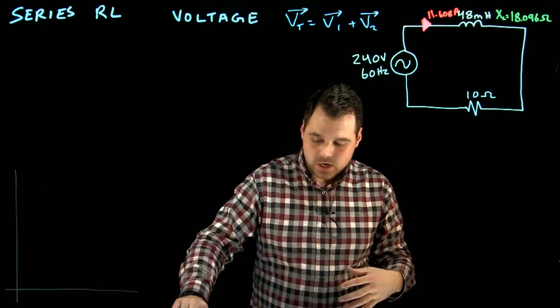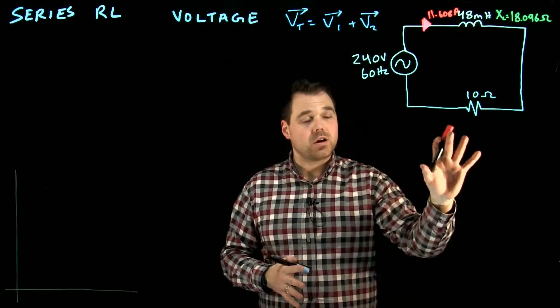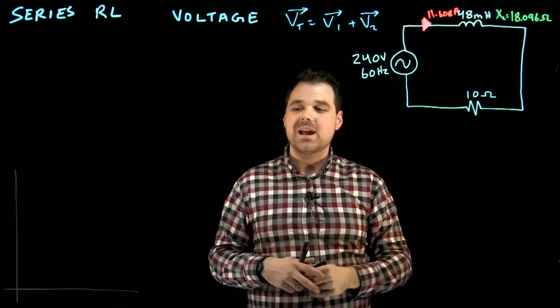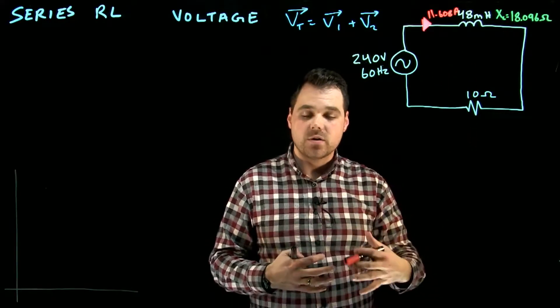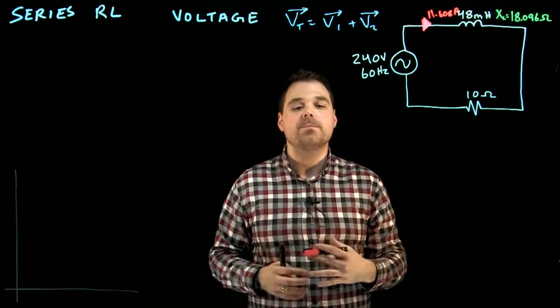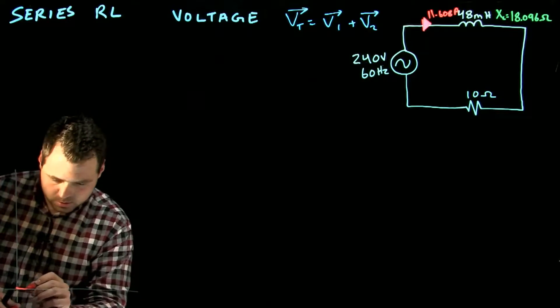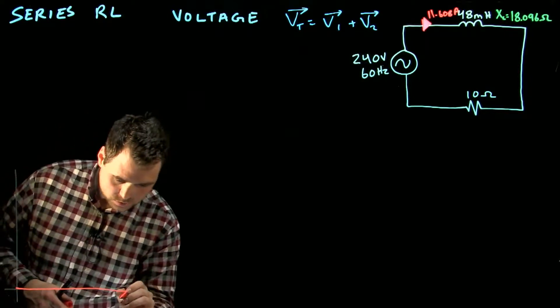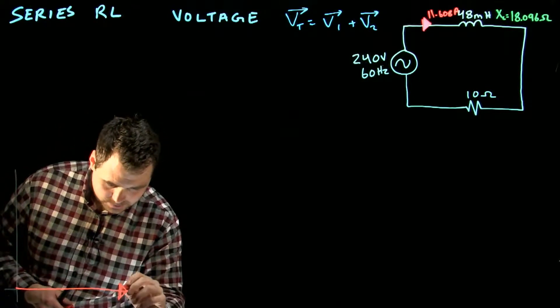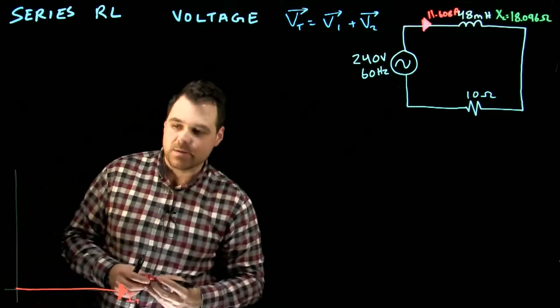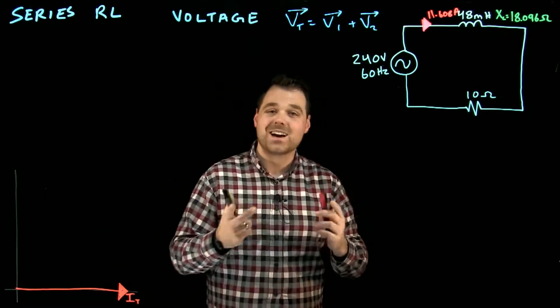Before we get going, a couple things. It's a phasor diagram for this. I have 11.608 amps of current. Now that current is going to be constant throughout the circuit, therefore we're going to use it as our reference in this circuit. I'm not going to put values here on my phasor diagram, but I'm just going to label the phasors. I'm going to say that one is IT.